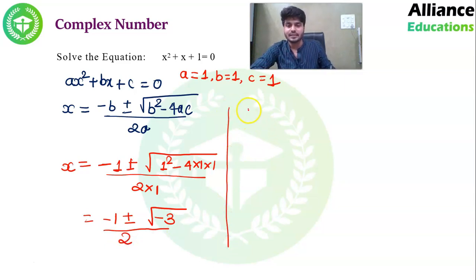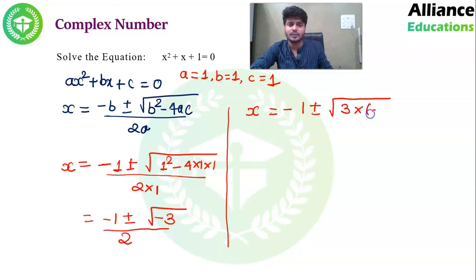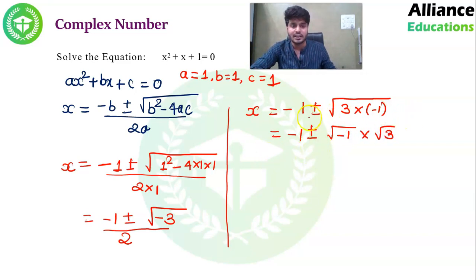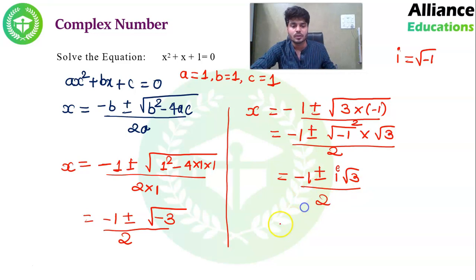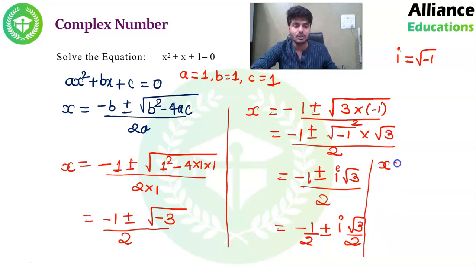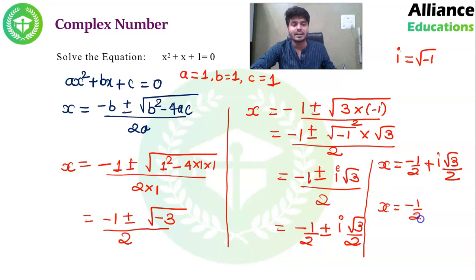√(−3) को हम लिख सकते हैं √(3 × (−1))। Root separate करने पर: √(−1) × √3। Root minus 1 को हम i लिखते हैं, so x = (−1 ± i√3) / 2। यह हो जाता है x = −1/2 ± i√3/2। तो x की दो values मिलती हैं: x = −1/2 + i√3/2 and x = −1/2 − i√3/2।